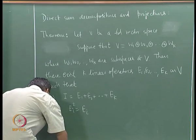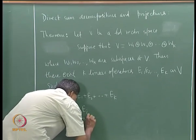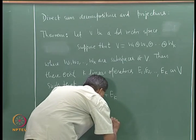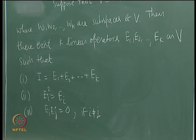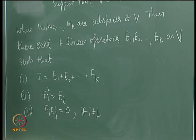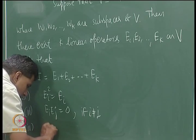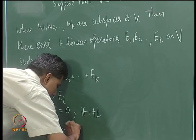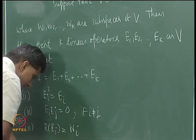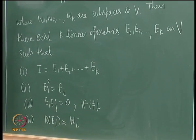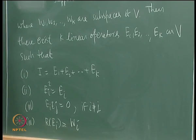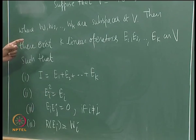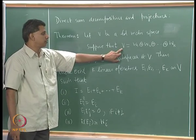If you take different Ei's and take the product, Ei·Ej equals the zero operator. Finally, the relationship between the Ei's and the Wi's is given by the last condition: the range of Ei is Wi. So the first three are properties of these operators E1, ..., Ek; the last one connects these operators to the subspaces Wi that form a direct sum decomposition of the vector space V.